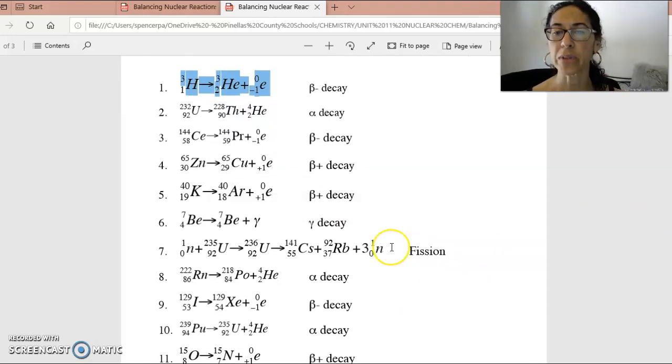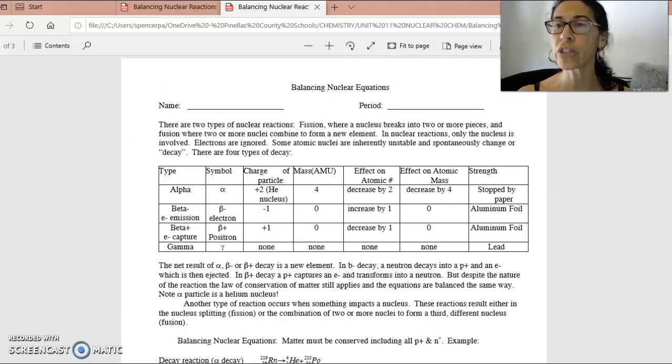Oh, you can skip number seven, by the way. On teams, I said do one through six and then eight through 12 because that's a little tricky. That's a fission problem. And I said, you don't have to do fission. All right, cuties. All right, let me know if you have questions. Join me this week if you need some help during our live sessions. Look forward to seeing you guys. Keep up the good work.